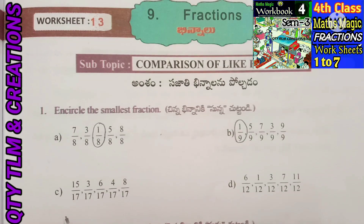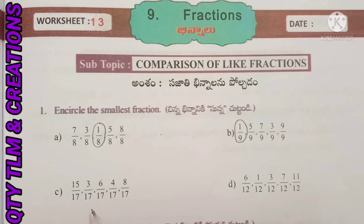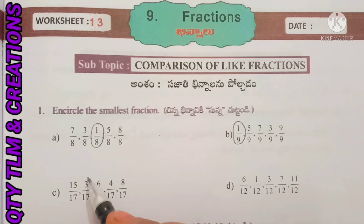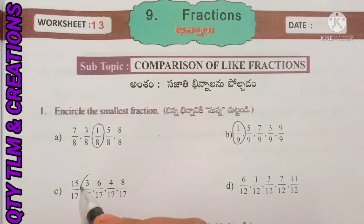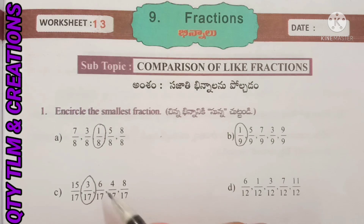Next, C: 15 by 17, 3 by 17, 6 by 17, 4 by 17, 8 by 17. Which fraction has the smallest numerator here? 3. So 3 by 17 is the smallest fraction.